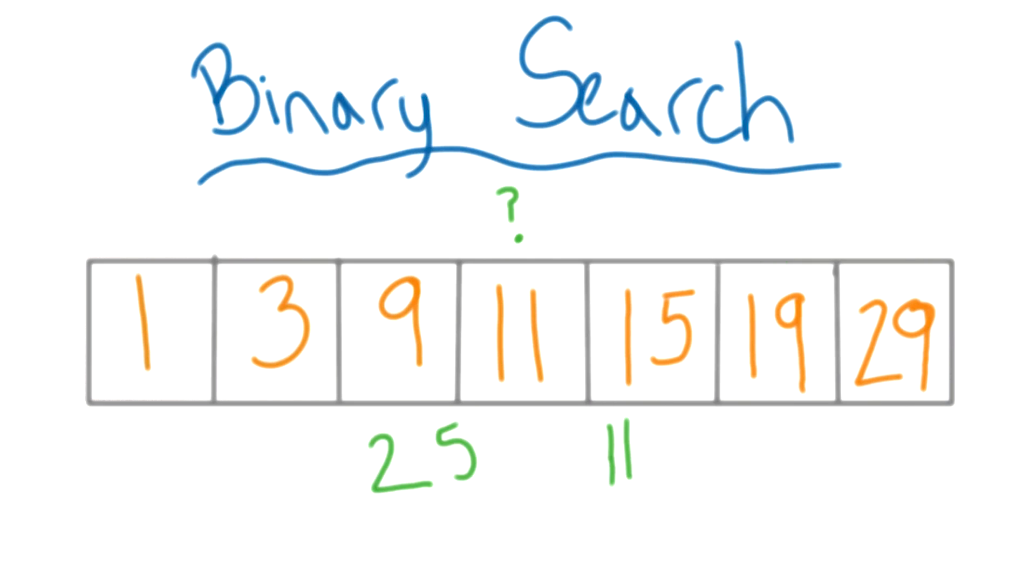You could say, is my number bigger or smaller than the one in the middle? Since my number is bigger, I know that it'll have to be in the second half of the array.